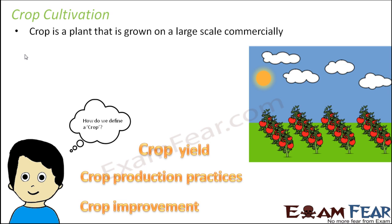Why do we cultivate crops? Because everybody needs food. All human beings need food. All animals need food. Every living organism needs food. So we need to grow a huge number of plants, and that is where we talk about crop cultivation.